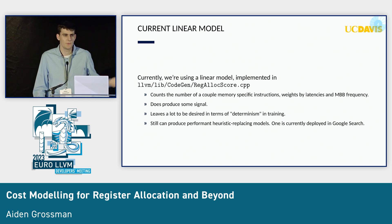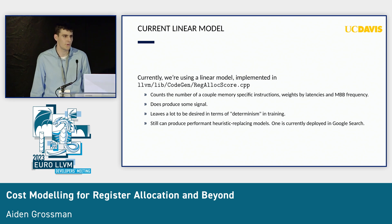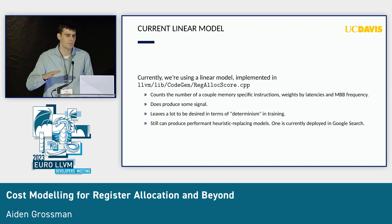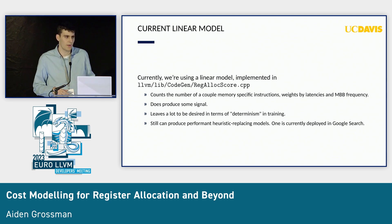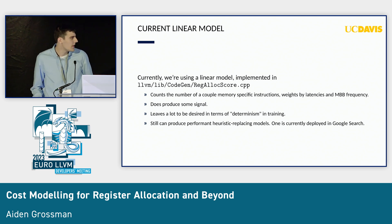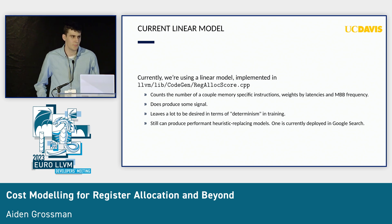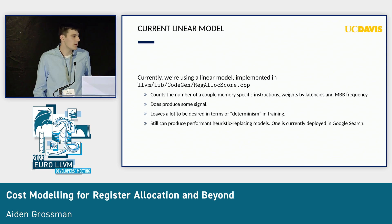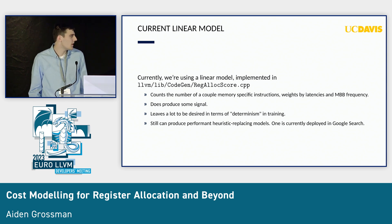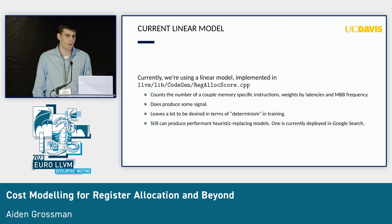The current linear model shipping in upstream LLVM is just a basic linear model that takes in six inputs, which are just the counts of individual instructions. These are then multiplied by approximate latency metrics and weighted by machine basic block frequency from PGO data. It does produce some signal, not necessarily a lot, but it definitely leaves a lot to be desired in terms of determinism for training.